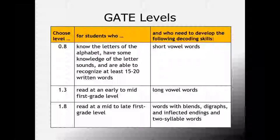You can use the level selection table to choose the appropriate GATE level. Students who know the letters of the alphabet, have some knowledge of letter sounds, and can recognize at least 15 to 20 written words can begin in GATE level 0.8, focusing on short vowels. Teacher modeling and repeated reading provide scaffolding that enables students to be successful when reading challenging text, even with limited word knowledge.